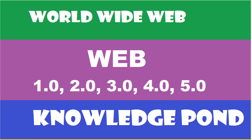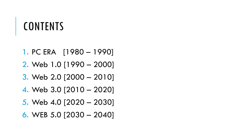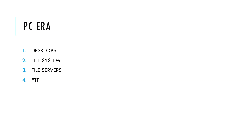Welcome to the Knowledge Point YouTube channel. In this video, I would like to share the different stages of the web: Web 1.0, 2.0, current 3.0, and future versions 4.0 and 5.0. The PC era starts from 1980 to 1990, then Web 1.0 from 1990 to 2000, Web 2.0 from 2000 to 2010, Web 3.0 from 2010 to 2020, Web 4.0 from 2020 to 2030, and Web 5.0 from 2030 to 2040.